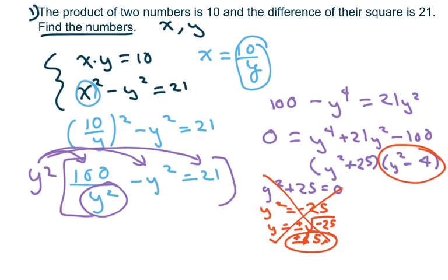So I'm only going to use this one. You get y squared minus 4 equals 0. So y squared equals 4, therefore y equals plus or minus 4.